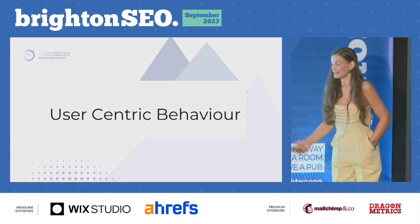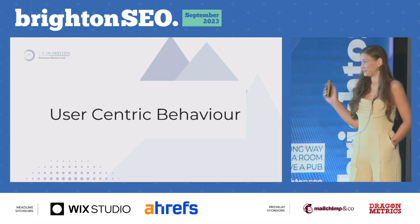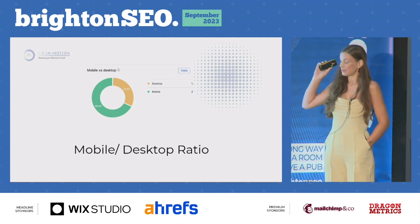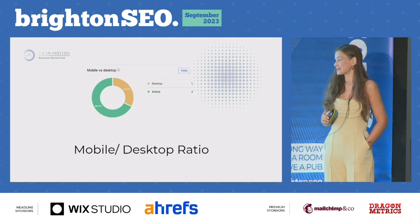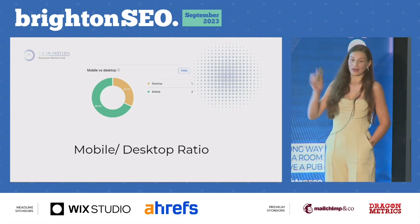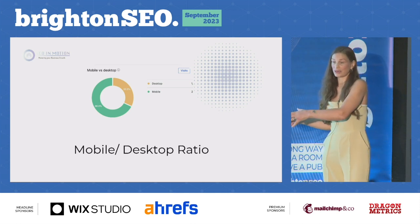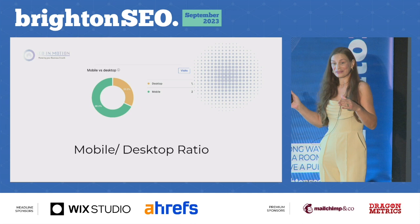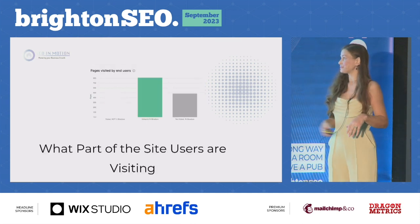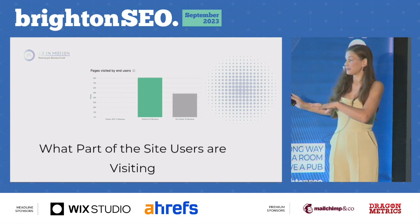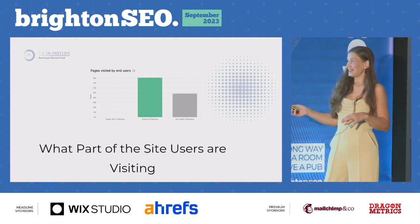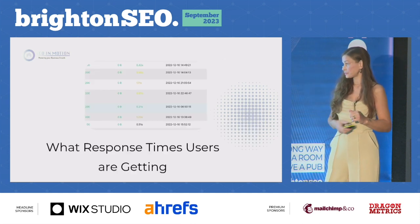There's also user-centric behavior we can monitor through log file analysis. This can include comparing whether the mobile-desktop ratio that Google's crawling matches up with your target audience. So if 80% of your target audience is on mobile and Google's only crawling 20% of your site via Googlebot Mobile, you've probably got a problem there because it's only ranking that proportion. You can also look at pages visited by end users in comparison to pages being crawled by Google, and whether that's matching up with your content strategy, as well as what response times users are getting.